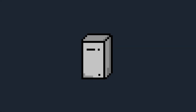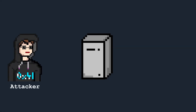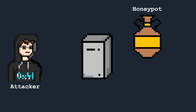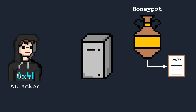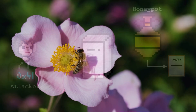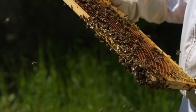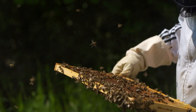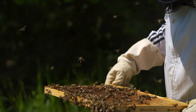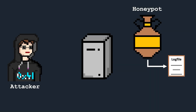How can you find out what an attacker wants to do on a system with as little risk as possible? With the help of a honeypot, for example. This is a security measure used to deceive, identify, and monitor potential attackers. Just as bees are attracted to honey, a honeypot is used to attract attackers and monitor their activities in a controlled environment.